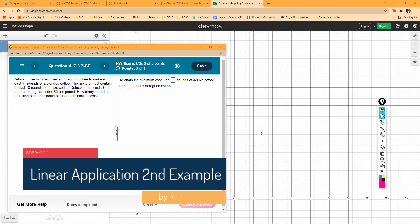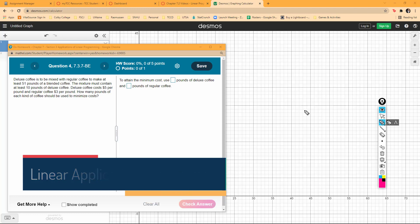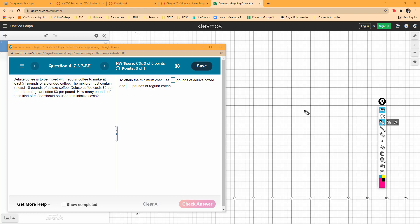Okay, let's look at another application that has some different constraints. We have deluxe coffee and regular coffee. I'll use X for deluxe and Y for regular.